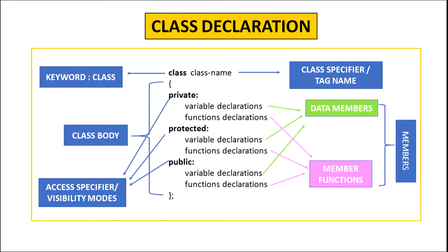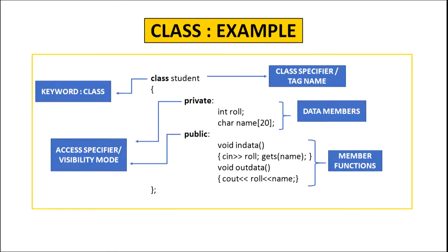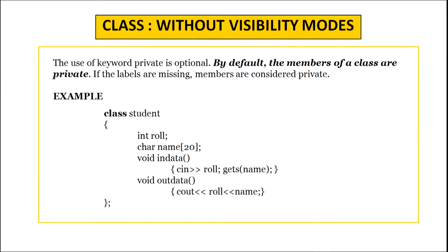We will talk about inheritance later. Now let us take an example of the class student. We start with the keyword class followed by the name of the class which is student, also called the tag name or class specifier. The data members of this class are role number and name, which are kept in the private visibility mode, and the member functions in_data and out_data are kept in public visibility mode. In in_data we input the details of the data members, and in out_data we display all the data members. If we define the class without any visibility mode, then by default it is taken as private, meaning all members are completely hidden from the outside world.